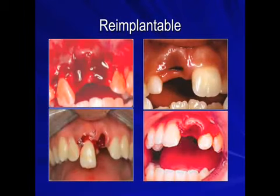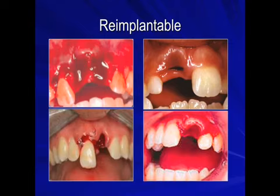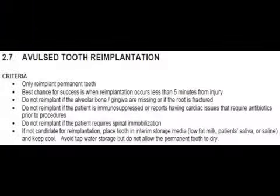All of these photos represent the location of an avulsed tooth that is eligible for re-implantation. As you can see, it is often the central incisor that is avulsed, and this makes for relatively simple re-implantation. Let's review our criteria one more time. We should only re-implant permanent teeth. Our best chance for success is when re-implantation occurs less than five minutes from injury. We should not re-implant if the alveolar bone or gingiva are missing or if the root is fractured.